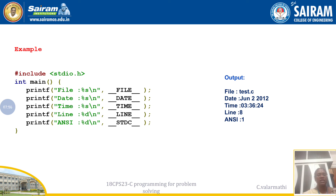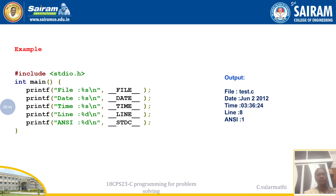Here is an example: after `#include <stdio.h>` and starting `int main()`, I use printf statements with these predefined macros. Since all predefined macros return values as strings (character arrays), I use the `%s` format specifier. The output prints: FILE, DATE, TIME, LINE, and STDC, each using the corresponding macro directly in the printf statement.